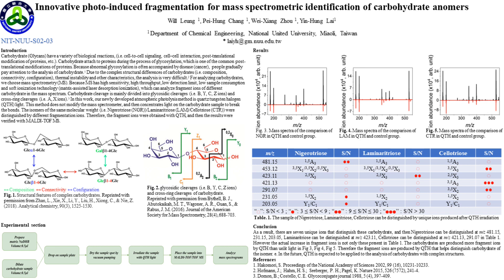For example, the structural complexity includes composition, connectivity, and configuration. The composition of carbohydrates is determined by their monosaccharide content. The monosaccharide building blocks are stereoisomers, such as glucose and galactose, which differ only in their C4 stereochemistry. For connectivity, the linkage between monosaccharides is achieved through glycosidic bonds, and the formation of glycosidic bonds can occur at several positions. For configuration, each glycosidic bond is a stereo-center and can have either an alpha or beta configuration. Carbohydrate cleavage can be divided into glycosidic bonds, for example B, Y, C, Z ions.